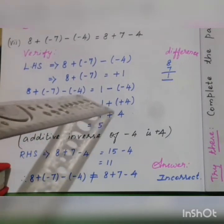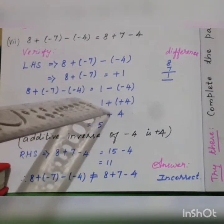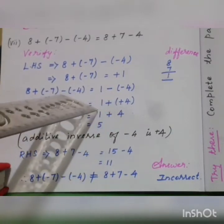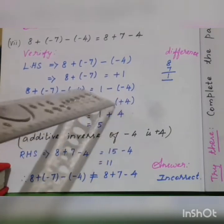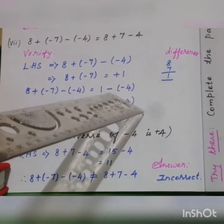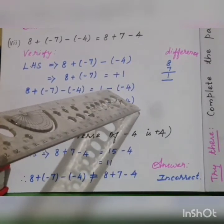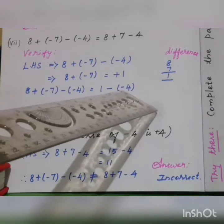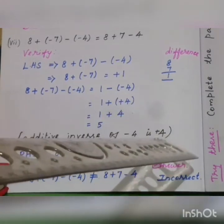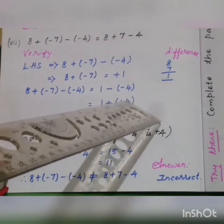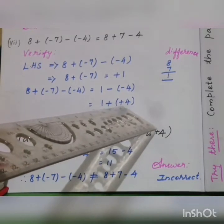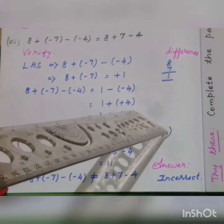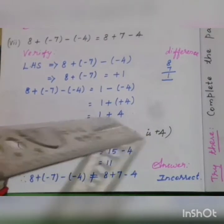Now the full left hand side: 8 plus minus 7 minus minus of 4. First two numbers give answer 1. Now move to the third part: in between minus sign and minus of 4. The subtraction sign changes to addition sign, and the second number minus 4 — additive inverse of minus 4 is plus 4. So plus 4, which we say as 4. Now: 1 plus 4 is 5.